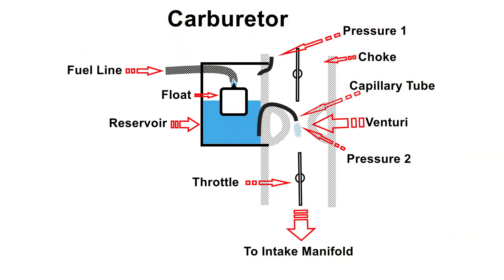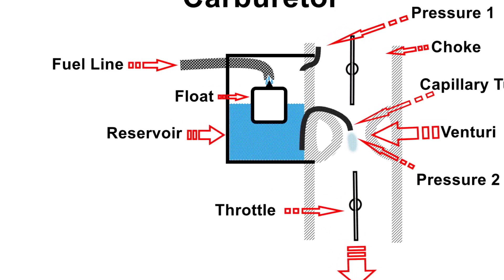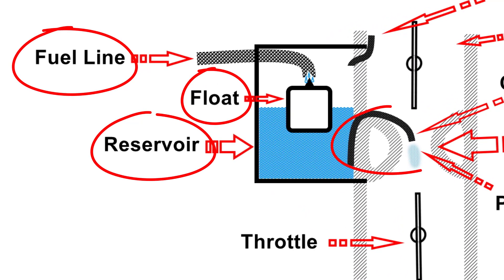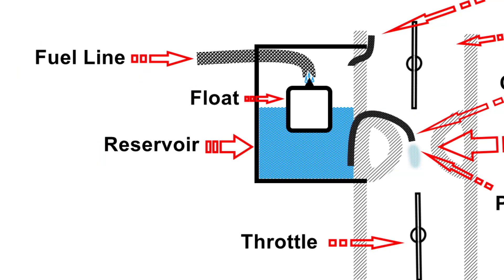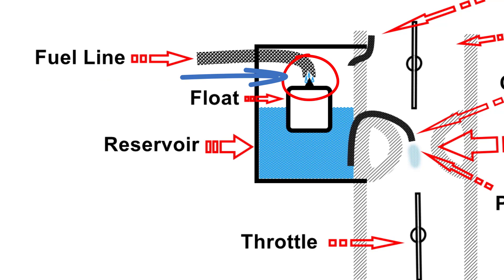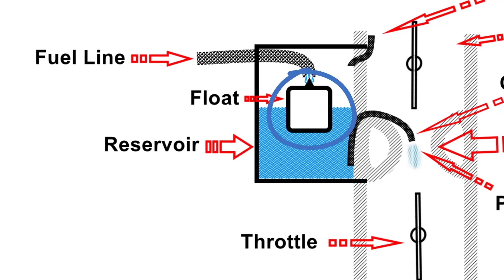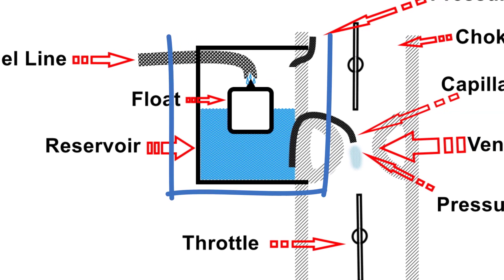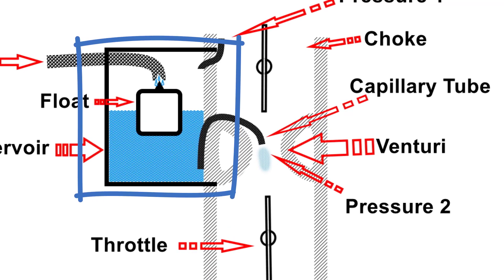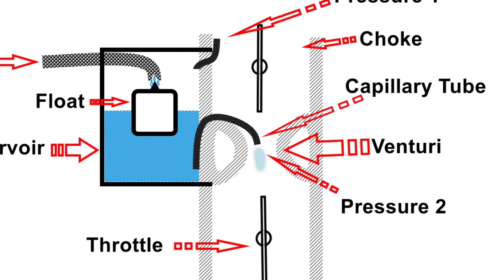These are the main components for a carburetor. For our project, we're going to focus on four main components. Liquid fuel or gasoline flows through this line when the float is not at the highest position. The float controls the amount of fuel that can flow in for the specific design reservoir, and the reservoir can have a different size for different carburetors. The capillary tube provides the amount of fuel depending on the engine demand.